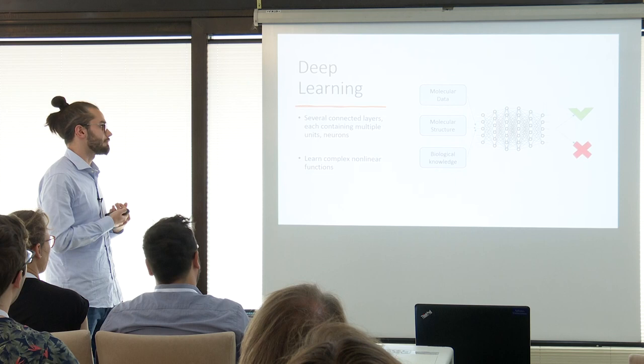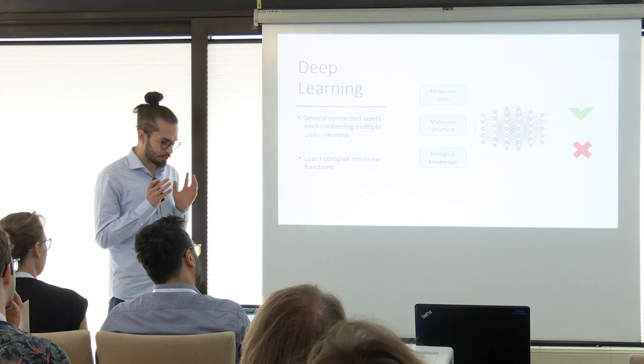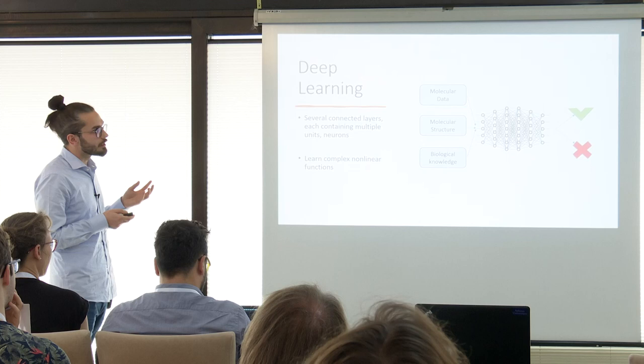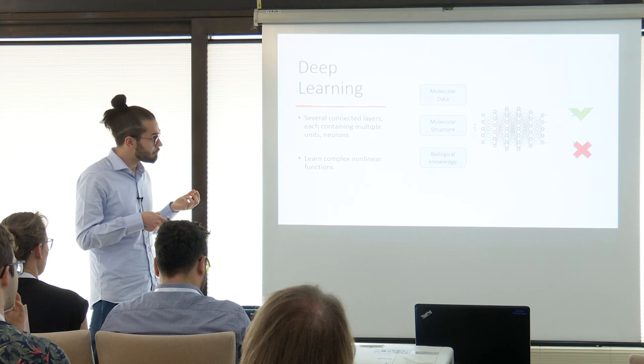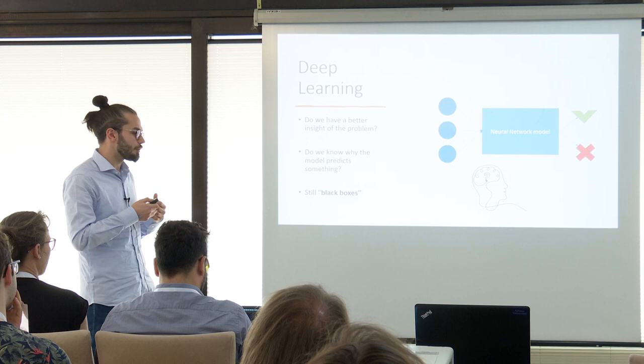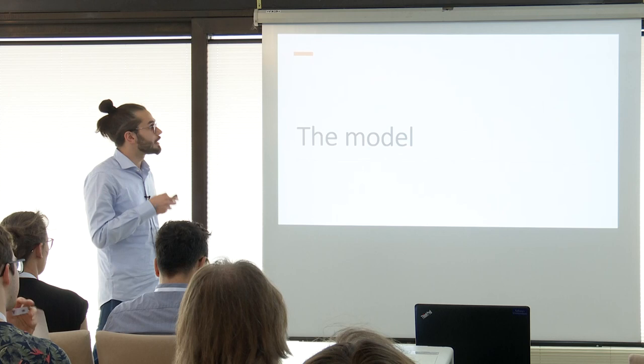A particularly suitable technology we currently use is deep learning. Roughly speaking, deep learning is just several connected layers with many neurons inside that learn complex functions. These networks are really useful and we can rely on their predictions, but they learn such complex patterns that we can't have a better insight into the problem. We get results, but we don't understand how the predictions are working.